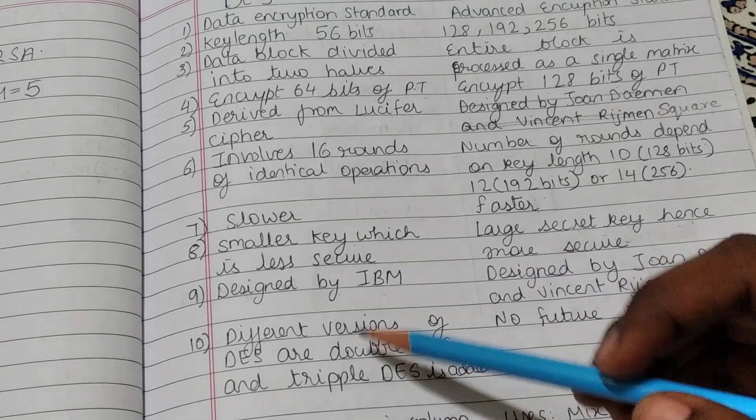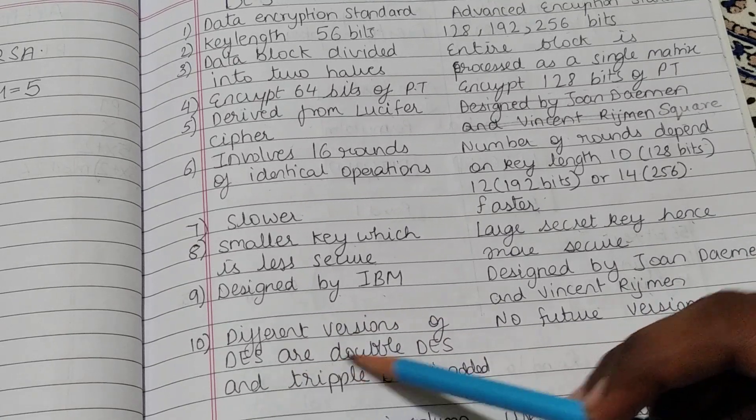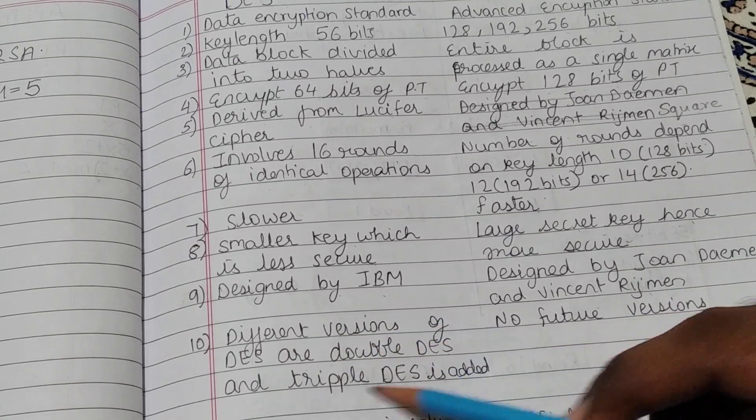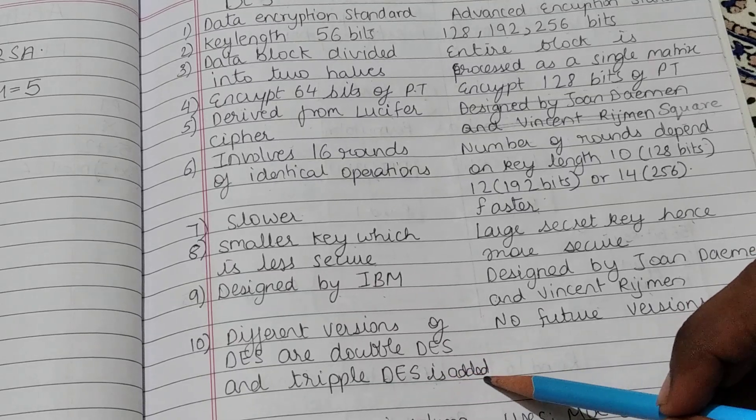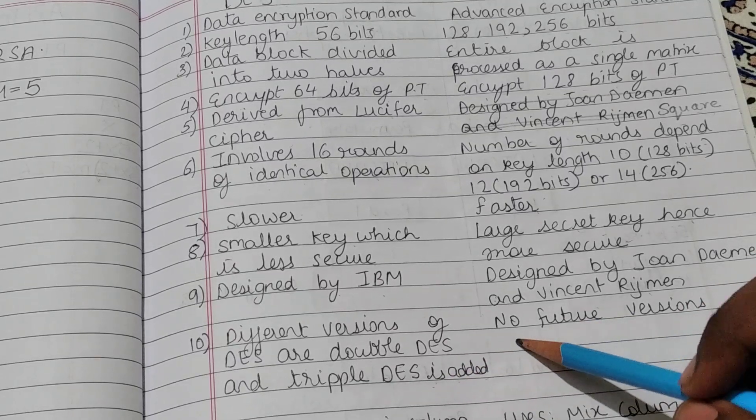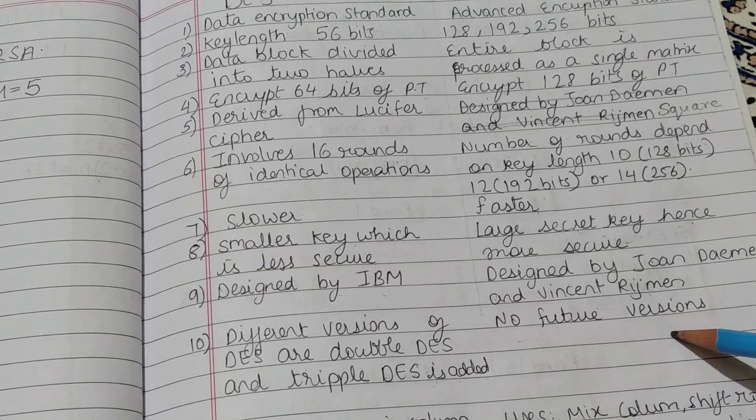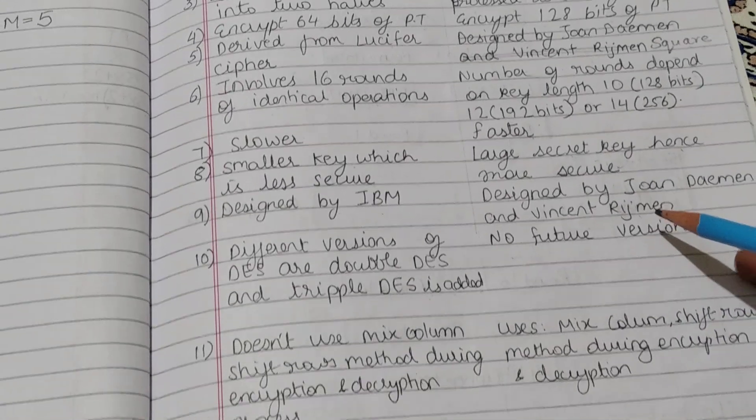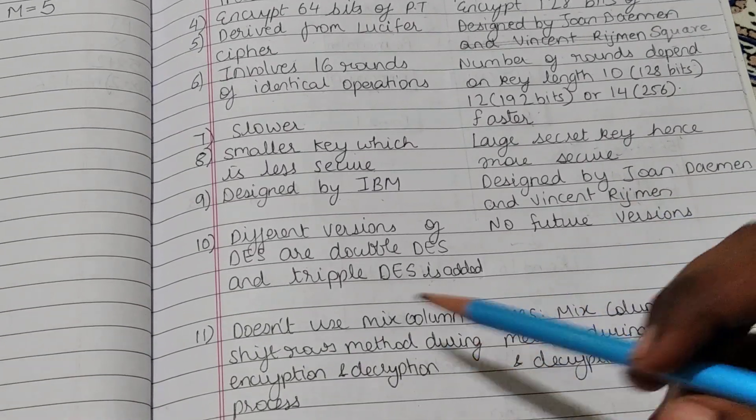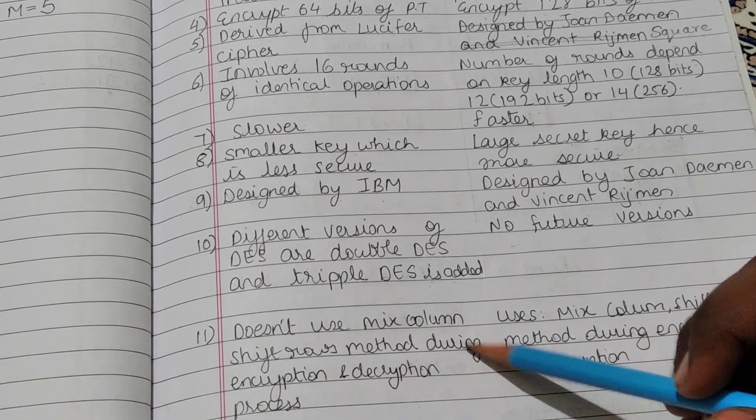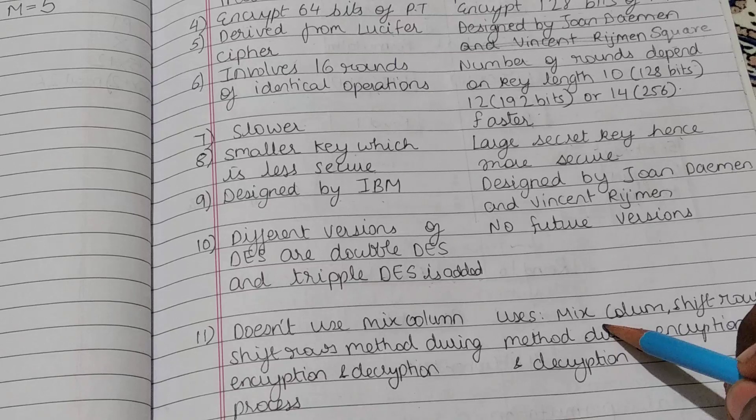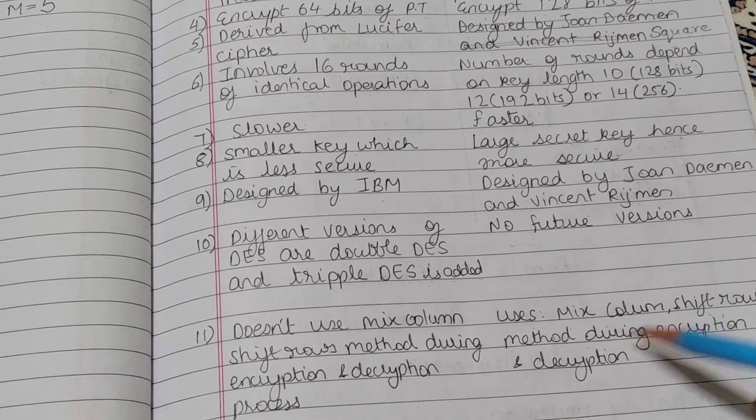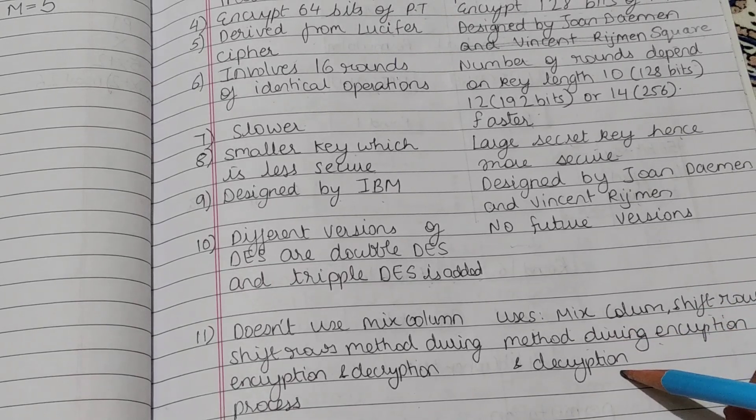Different versions of DES are available, like double DES and triple DES, which were added in future versions. But AES does not have any future versions. DES doesn't use mix column or shift rows method during encryption and decryption process, but AES uses mix column and shift rows method during encryption and decryption process.